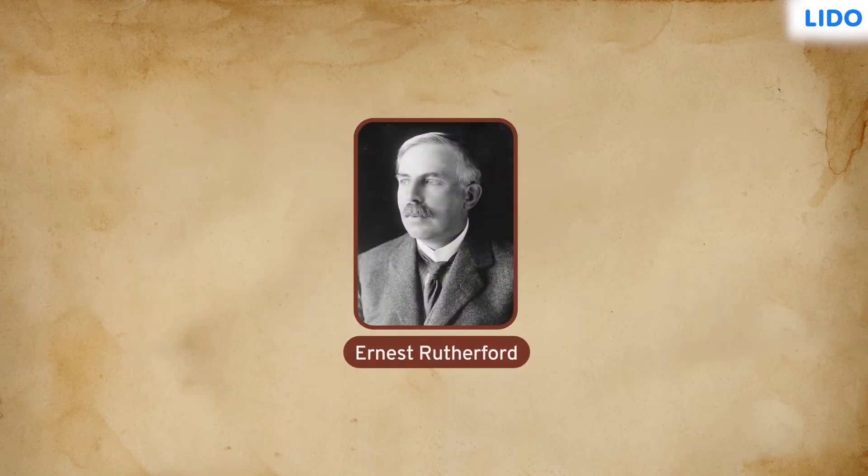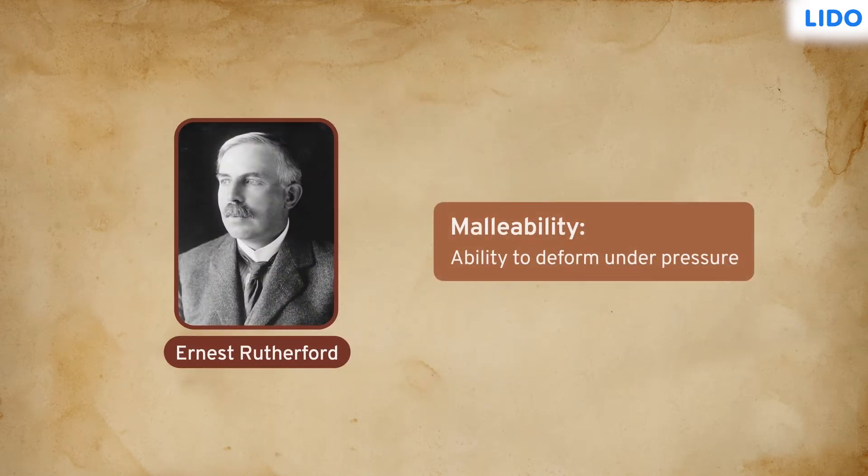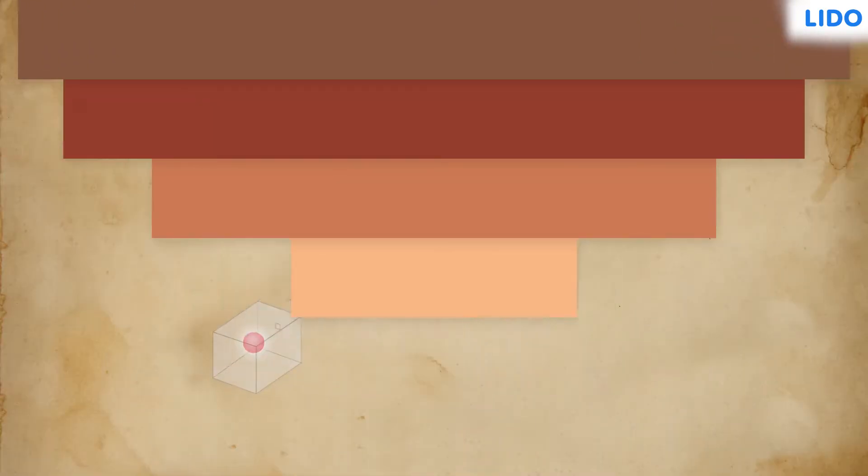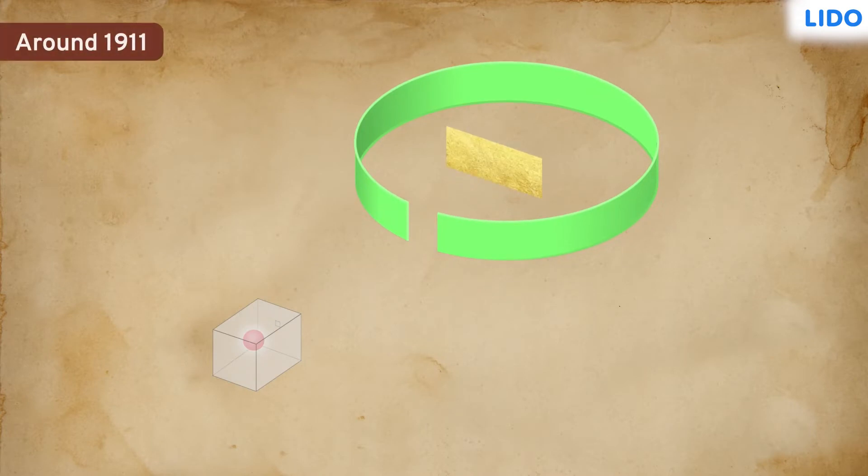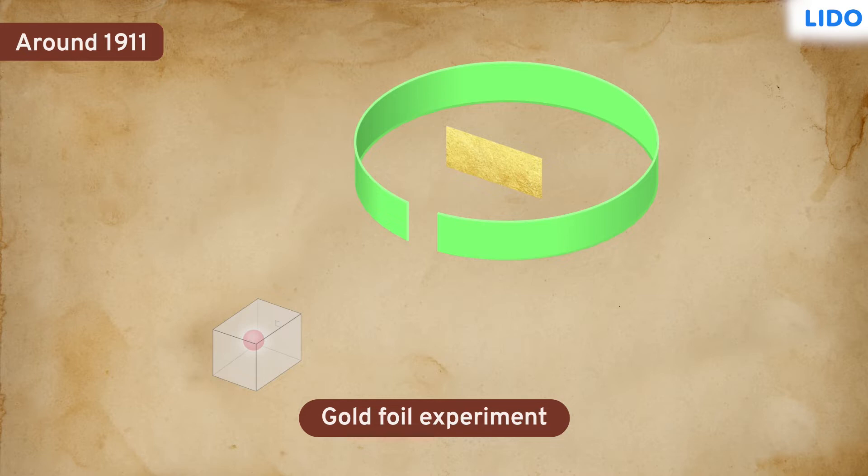But did you know it was this property of gold which helped Ernest Rutherford to discover the nucleus of an atom? Yes. In the year 1911, Ernest Rutherford conducted a gold foil experiment to understand the structure of an atom.